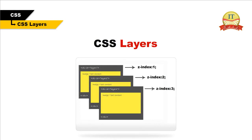CSS Layers. In CSS, layers refer to applying the z-index property to elements that overlap each other. The z-index property, when used in conjunction with the position property, lets you specify which element should appear on top in the event of an overlap. An overlap can easily occur when using the position property, and this is often desirable when creating advanced layouts.